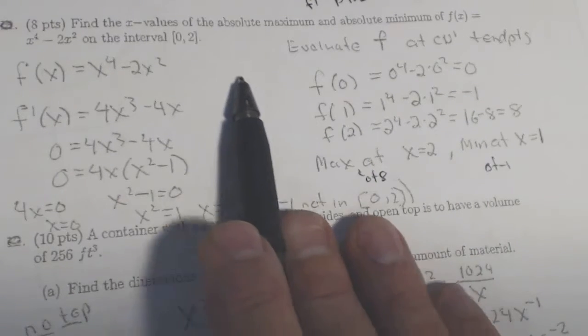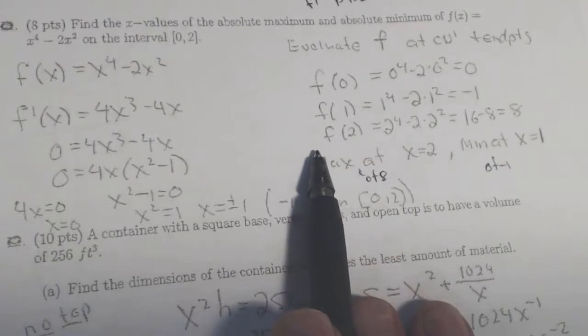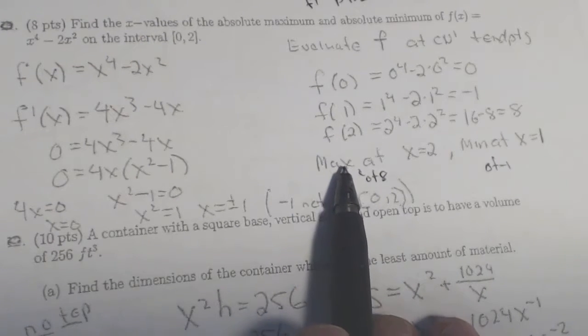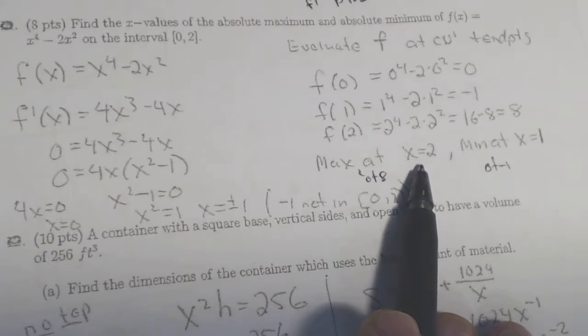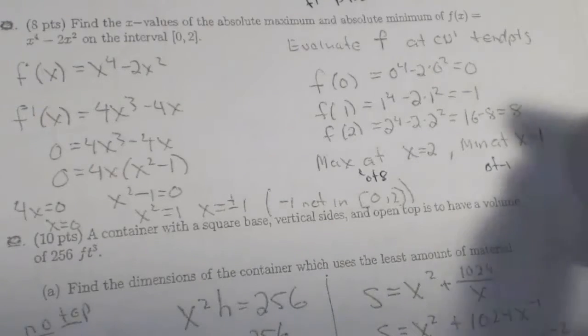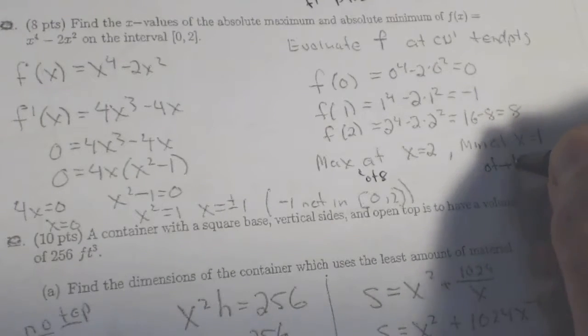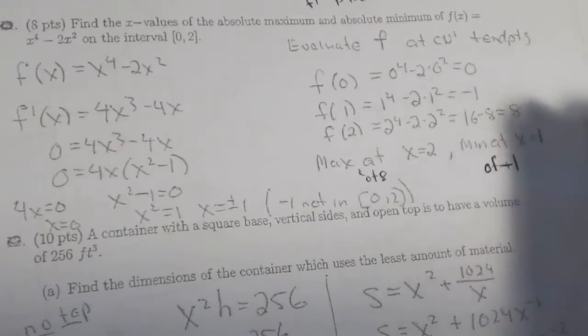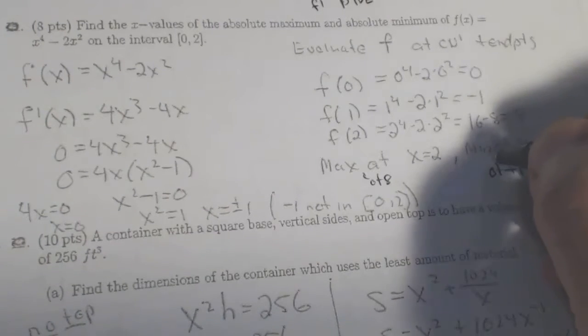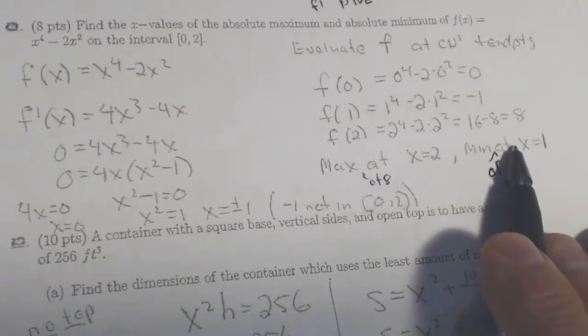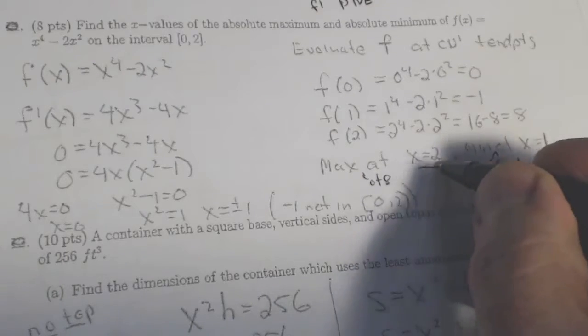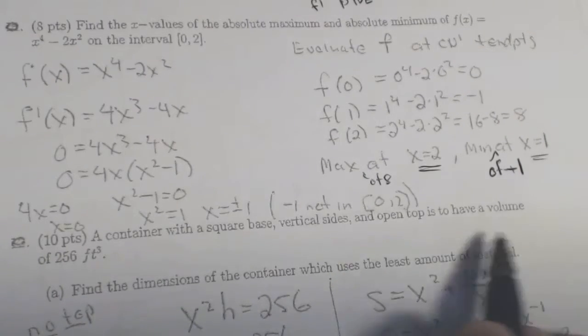We then declare they ask for the x values. The maximum, and I think it's really good to say the maximum of 8 occurs at x equals 2. That way you answer the question no matter what they ask. And the minimum of negative 1, that's inserted right there, occurs at x equals 1. All they needed was the x equals 2 and x equals 1 there for the maximum min.